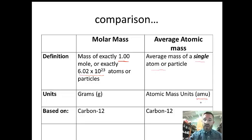Average atomic mass refers to a single atom or particle. The units for average atomic mass are in AMUs. If I ask for mass in AMUs, I'll probably specify that. Almost all the time, we're going to be using grams.